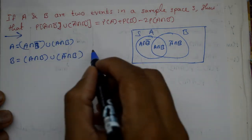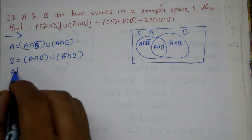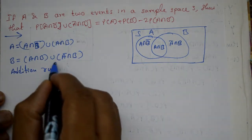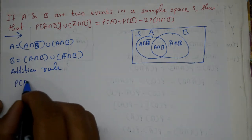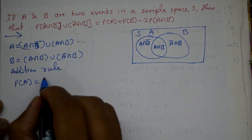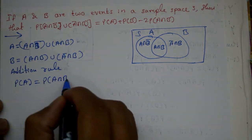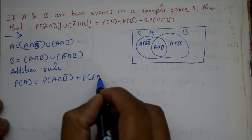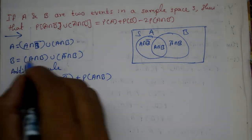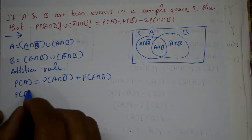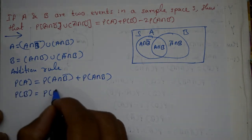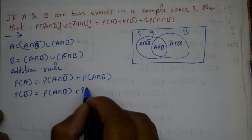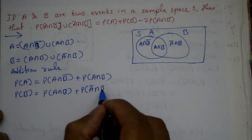Now we are using the addition rule. Probability of A equal to probability of A intersection B bar plus probability of A intersection B. Now second: probability of B is equal to probability of A intersection B plus probability of A bar intersection B.